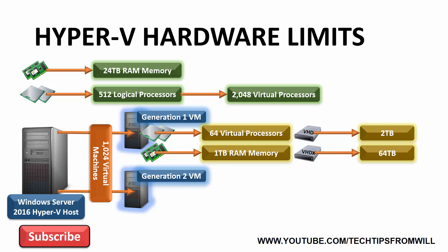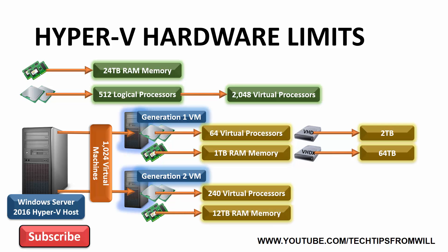VHDX virtual hard disks are the newer standard of virtual hard disk and were first introduced in Windows Server 2012. VHDX virtual hard disks scale better than the older VHD disks, up to 64TB. Also, according to Microsoft, VHDX virtual hard disks are far more resilient than VHD disks and are less prone to data corruptions. With Generation 2 virtual machines, the administrator can allocate up to 240 virtual processors to each virtual machine and up to 12TB of RAM. For storage, Generation 2 virtual machines only support the newer VHDX virtual hard disks.